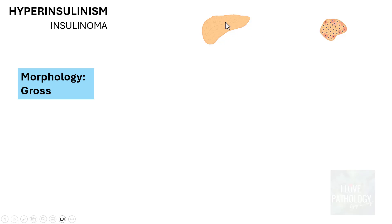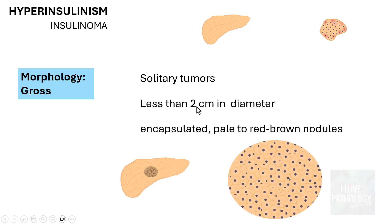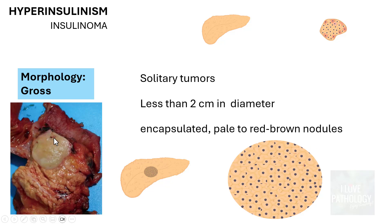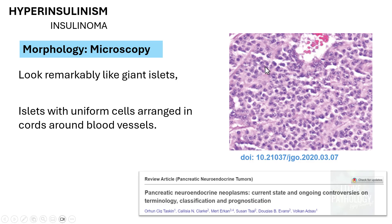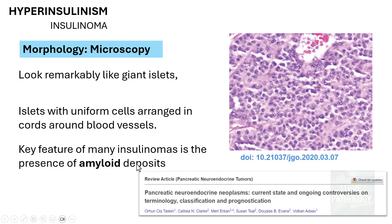Morphologically, grossly insulinomas are solitary tumors often less than 2 cm in diameter — encapsulated, pale to red-brown nodules. Microscopically, the tumor looks remarkably like normal islets. The cells are uniform and arranged in cords around blood vessels. Some of these tumors contain abundant amyloid, which is a key feature of many insulinomas and can be demonstrated by Congo red stain observed under a polarizing microscope.